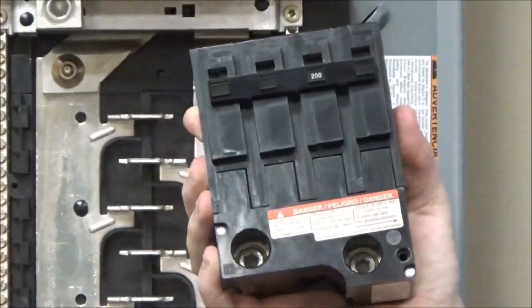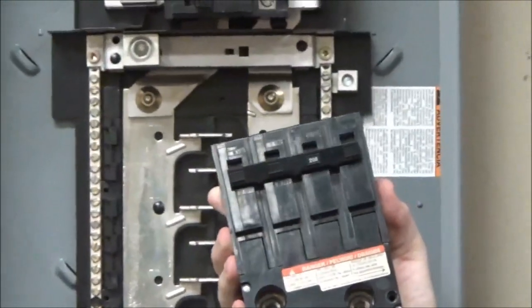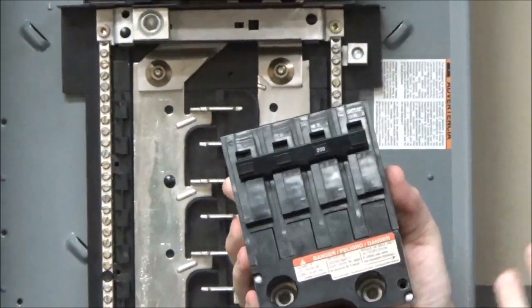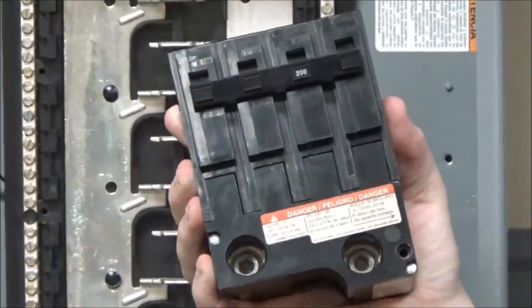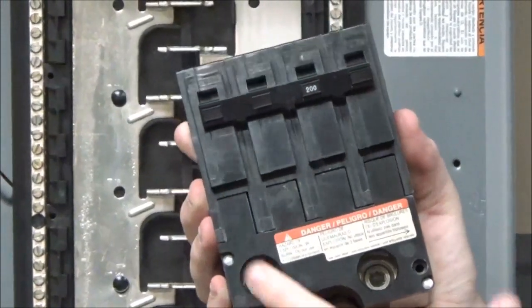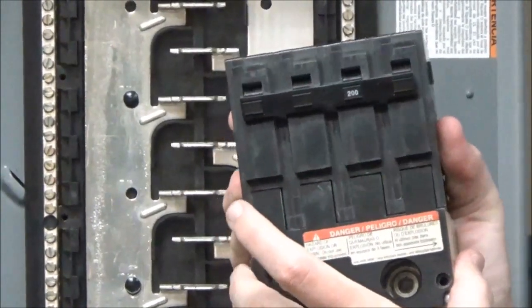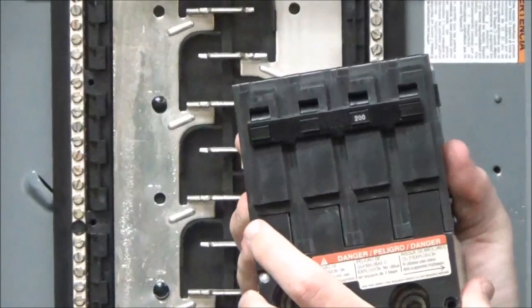This is only to be used as a branch breaker and cannot be mounted in the same spot as the non-BB style. This bracket with the two screws cannot be removed from the breaker.